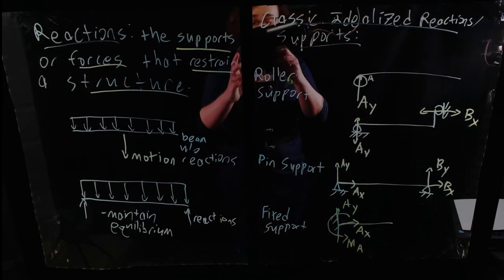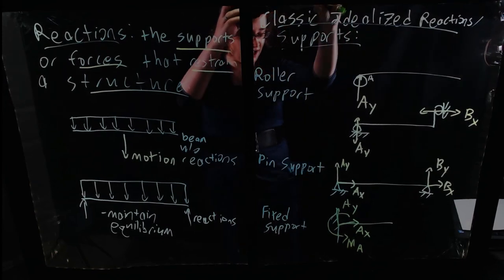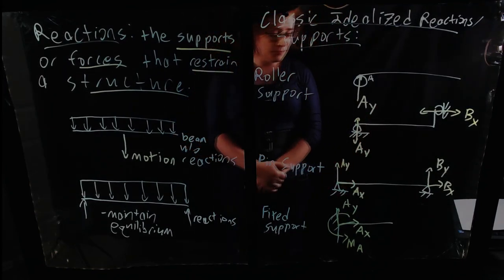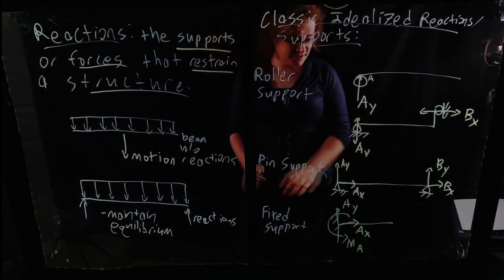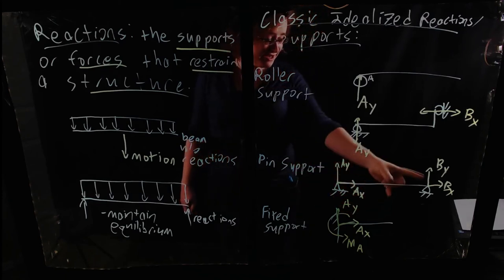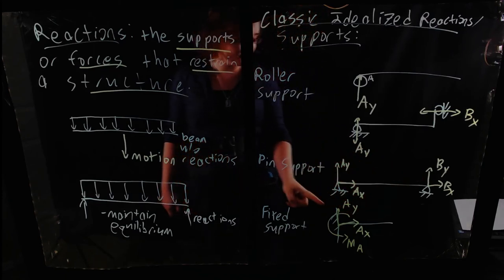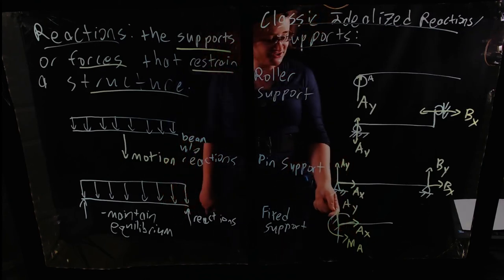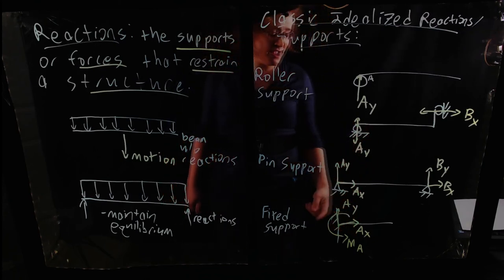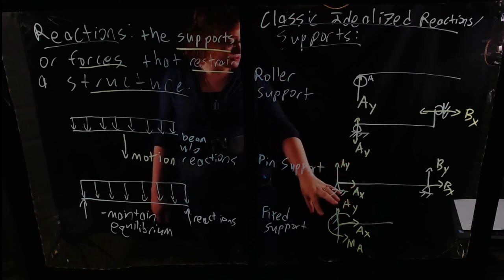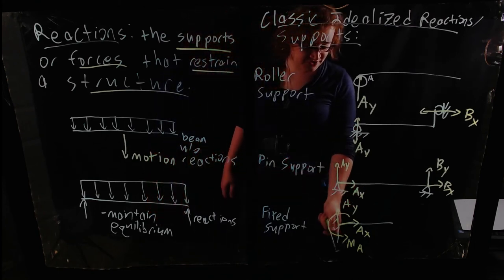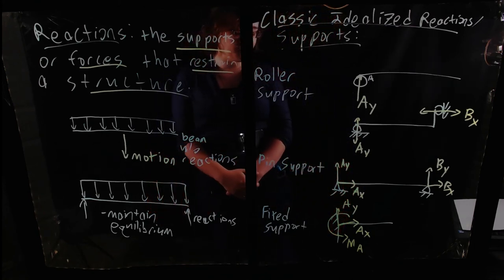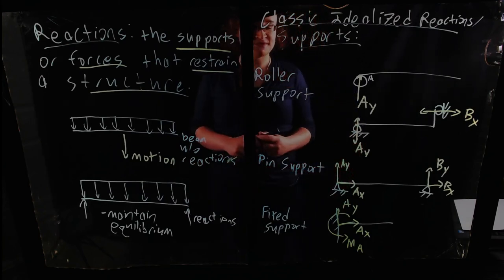And so again, this particular restraint, this particular support will be capable, if this beam tries to move to the right, it will be resisted by translational force AX. If it tries to move upward, it will be resisted by translational reaction AY. And if it tries to rotate, it will be resisted by the restraining moment MA. So these are the three basic types of support.